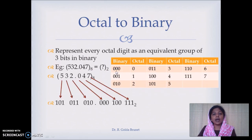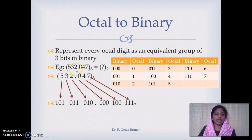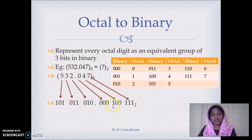Now we will consider converting an octal number to binary. Every octal digit can be written as an equivalent group of 3 bits using the same mapping table. For example, 532.047 in octal: 5 maps to 101, 3 maps to 011, and so on — writing the corresponding bit patterns gives the binary number.